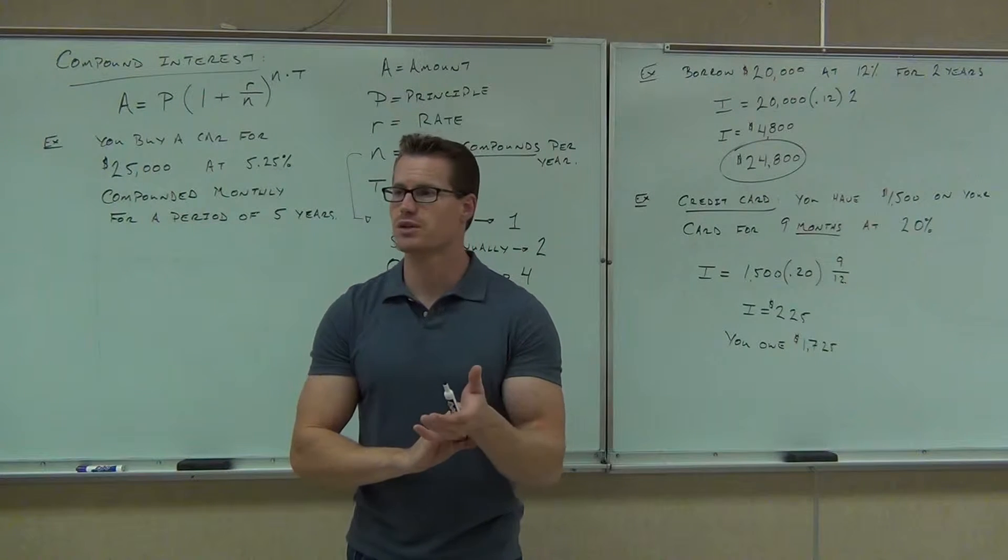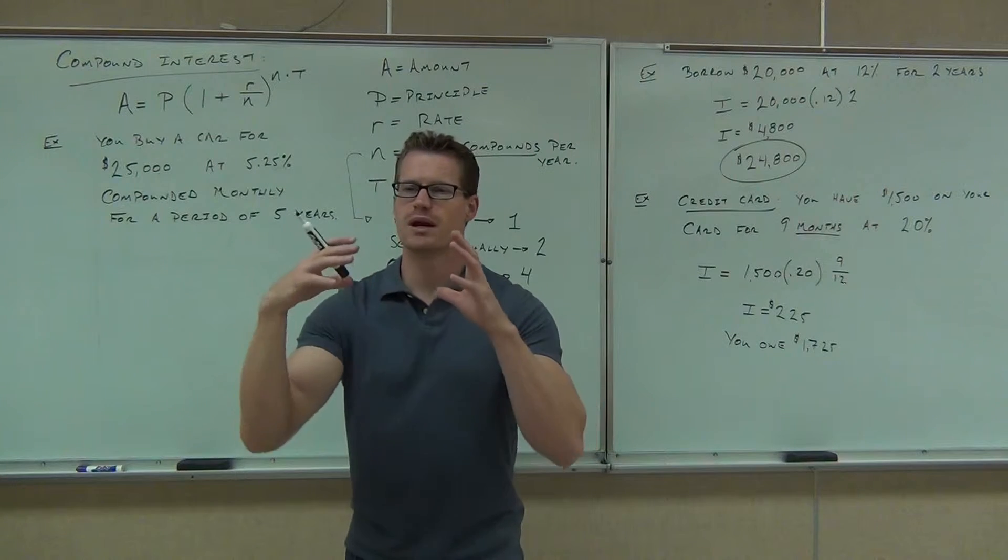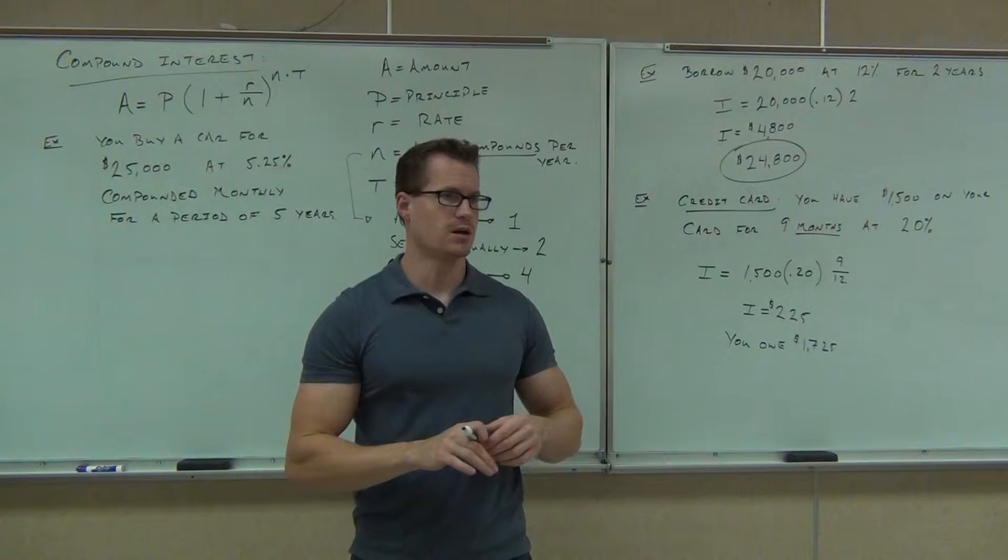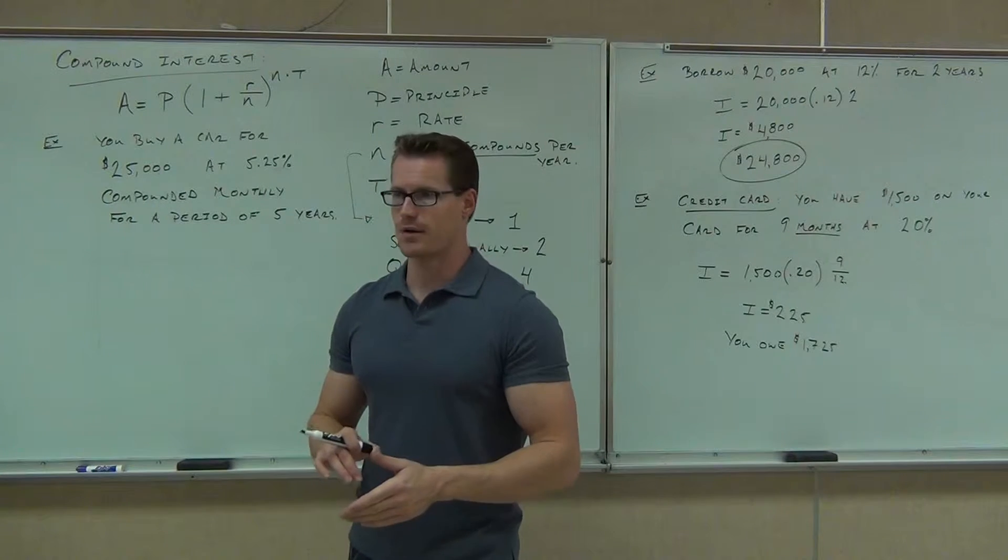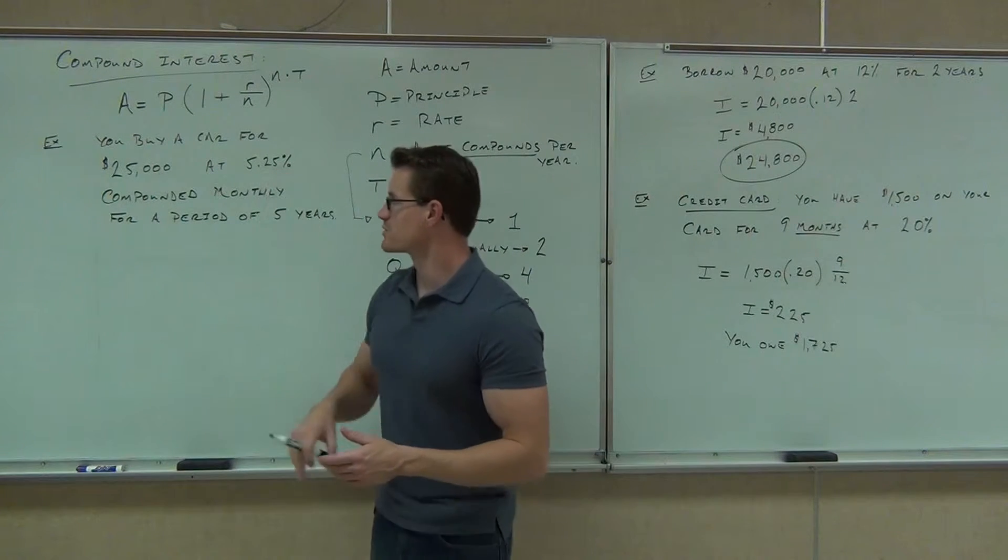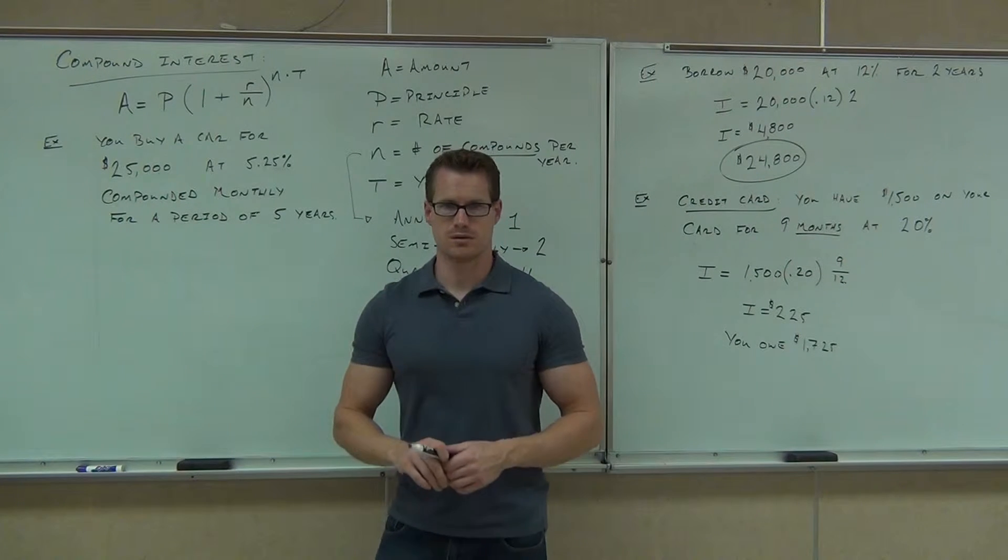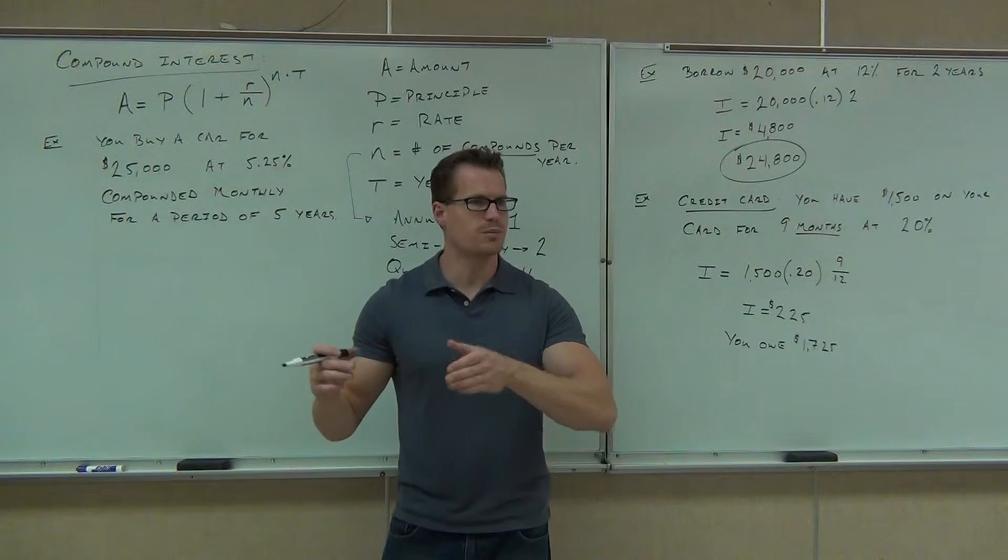We're going to do things a little bit simplified. We're going to say just how much overall money would you have to spend for this if you made no payments to the very end? So you go in today, you buy your car. They say you're getting charged this month's interest, compounded monthly for five years. Just do this. At the end of five years, come in and pay us all the money. That's what we're doing here. We're not going to be paying by the month.